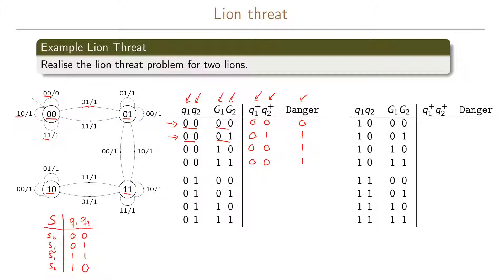Now we go to the next state, represented by 01. With input 00, we stay in state 01 with a one as output. With input 01, we also stay in state 01 with a one as output. With input 10, we go to state 11 with a one as output. And with input 11, we go back to the 00 state, also with a one as output.